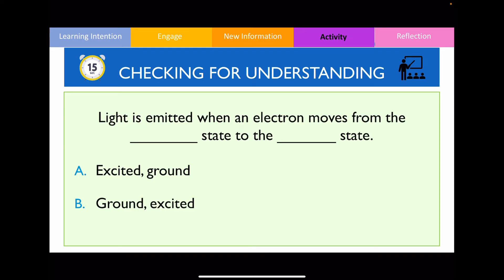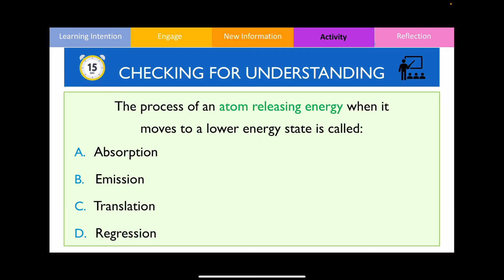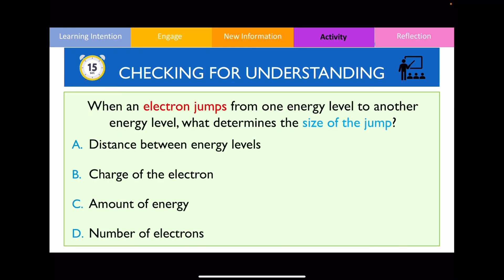You also need to identify what state the atom is in — light is emitted when an electron moves from the excited state back to the ground state. The process of an atom releasing energy as it moves to a lower energy state is called atomic emission. For the last question: when an electron jumps from one energy level to another, what determines the size of the jump? I've only shown examples where electrons jump between one shell, but you can actually jump between one, two, three, or more electron shells, and that's dependent on how much energy is applied. A very intense, strong flame or high energy radiation will cause the jump to be much greater.